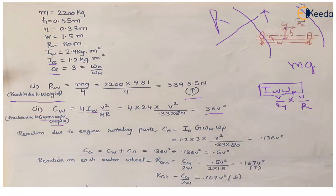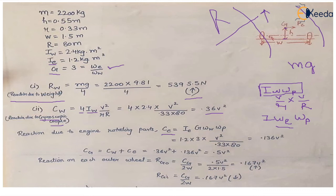Now for the reaction due to engine rotating parts, the formula is I × ωe × ωp. Since ωe is not directly given, we use the gear ratio: ωe = G × ωw. The angular velocity of precession ωp remains the same. Substituting all values gives 0.136 v square.